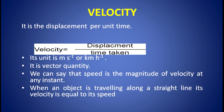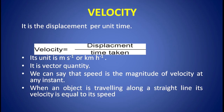Now, what is velocity? Velocity is the displacement per unit time. So, velocity equals displacement divided by time taken. Its unit is meter per second or kilometer per hour. It is a vector quantity. We can say that speed is the magnitude of velocity at any instant. When an object is traveling along a straight line, its velocity is equal to its speed — meaning for straight line motion, velocity and speed are the same.